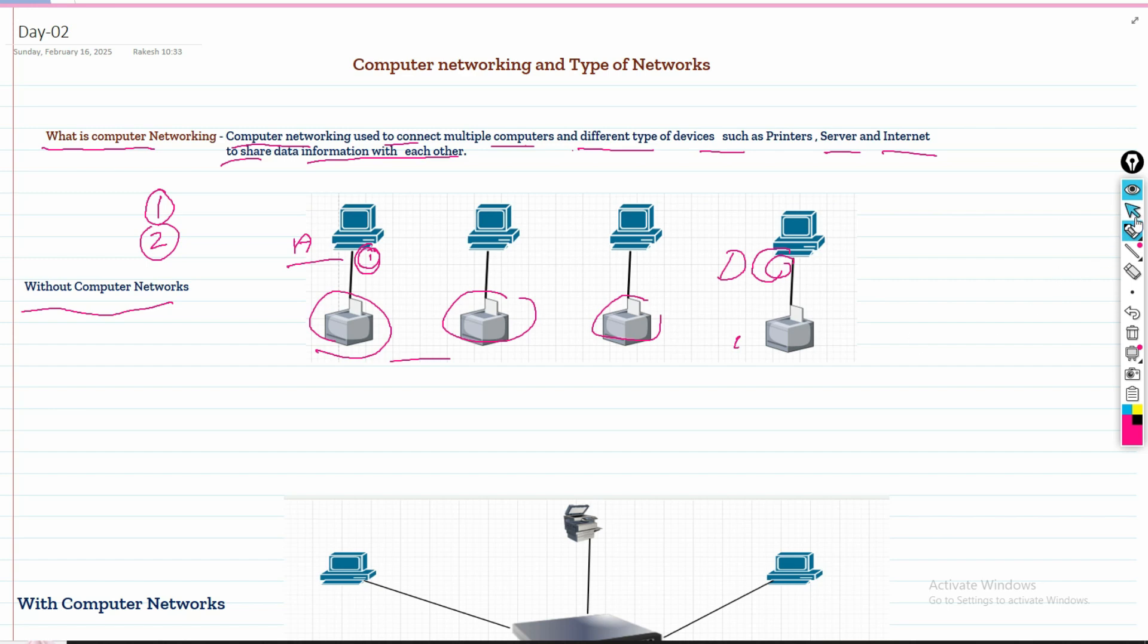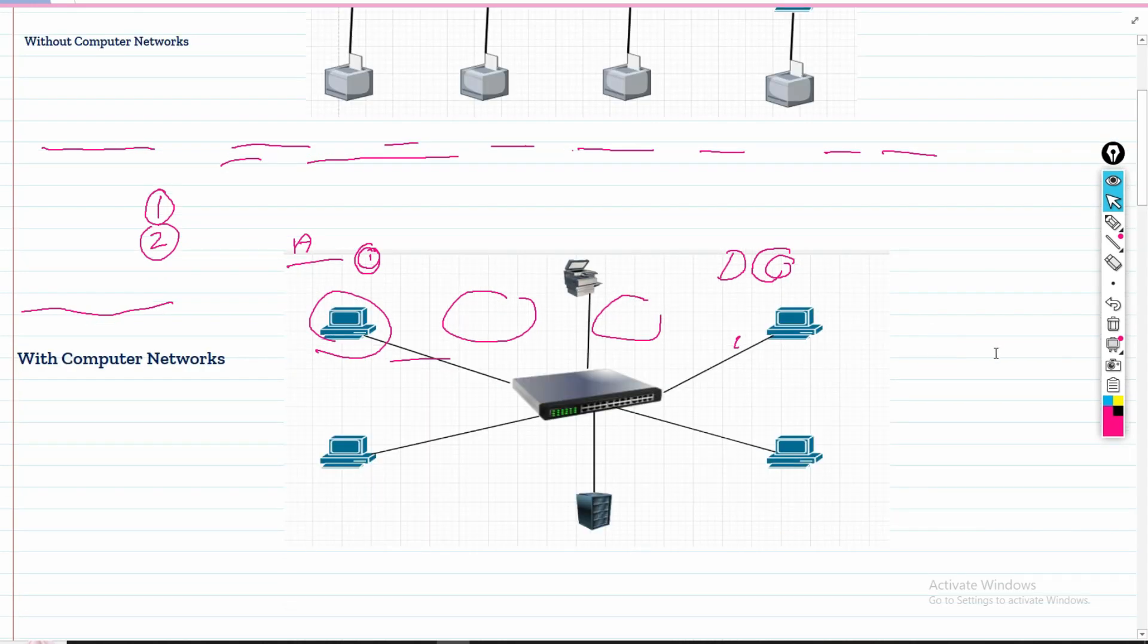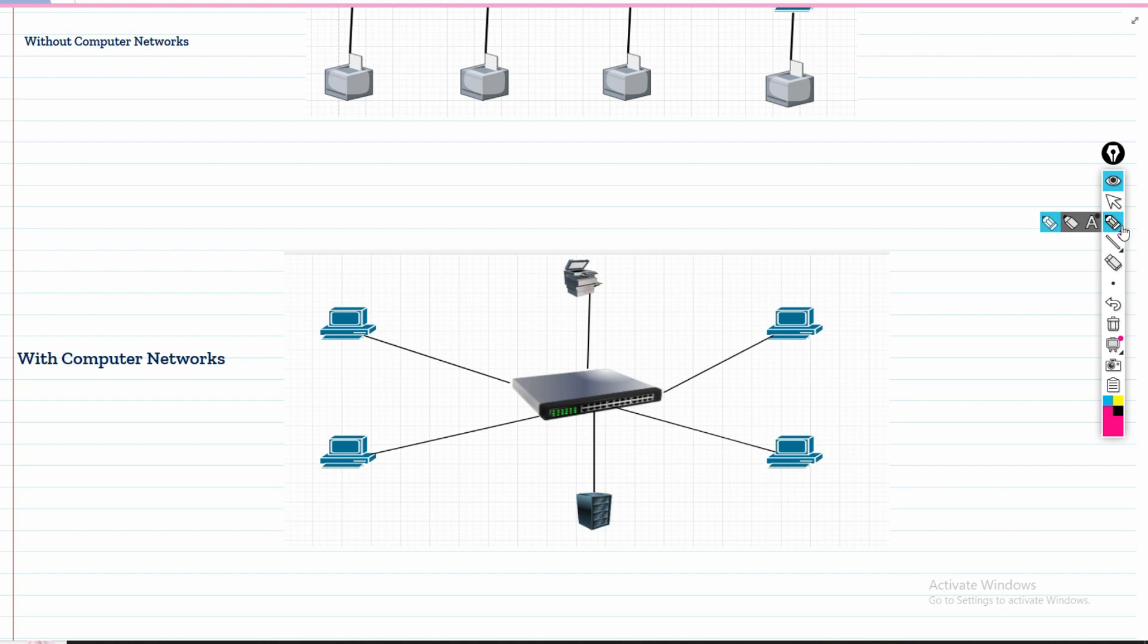That's why we require a computer network. With a computer network, if a PC wants to send data to PC D, it will send directly. No external media will be required to send data from this PC to that PC. They are connected with a centralized device - a switch or hub.